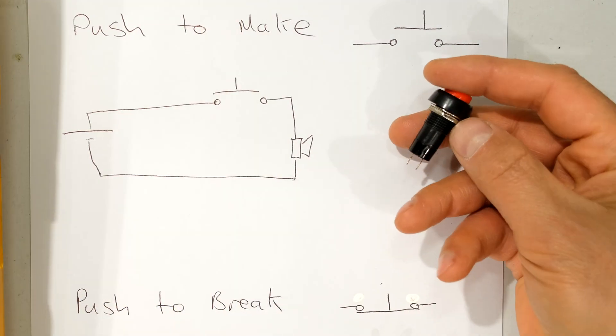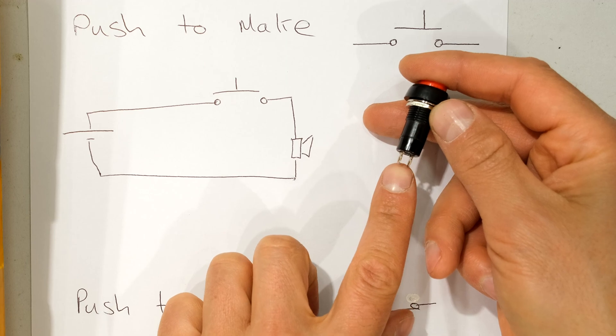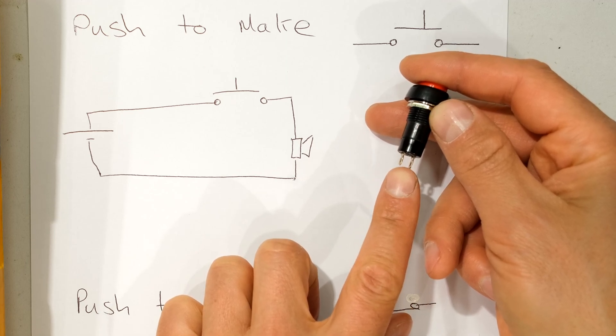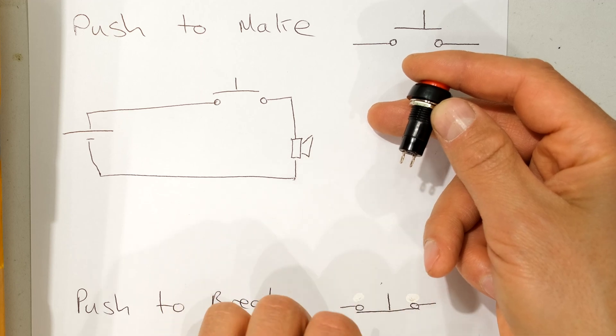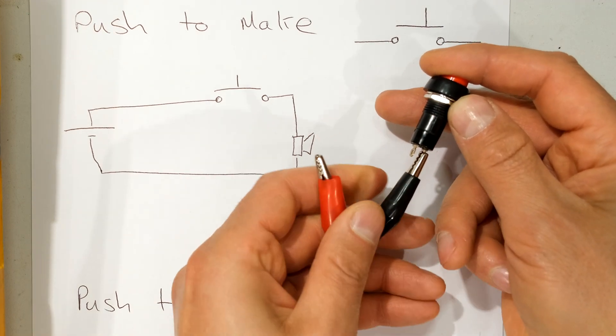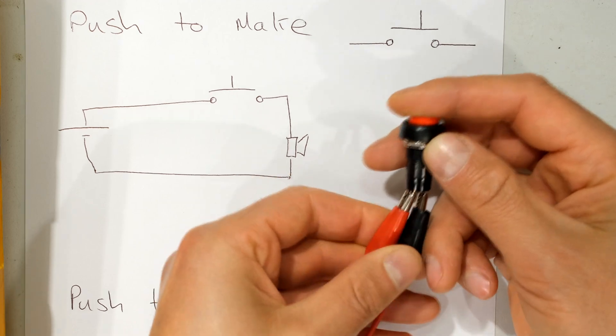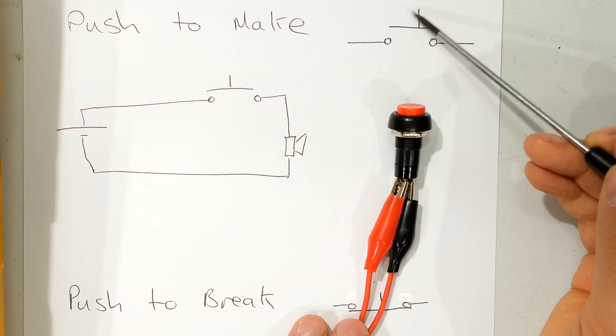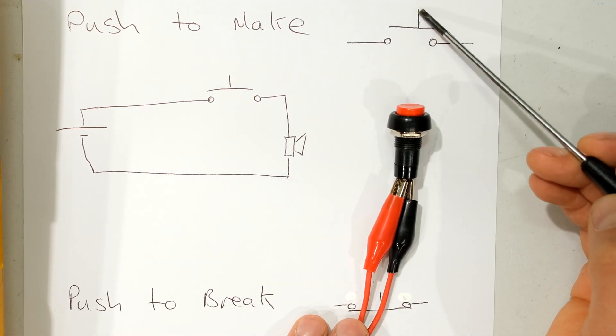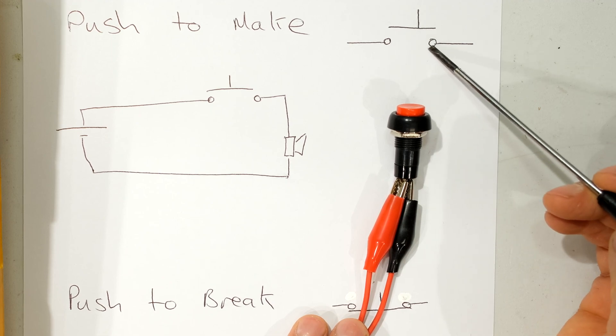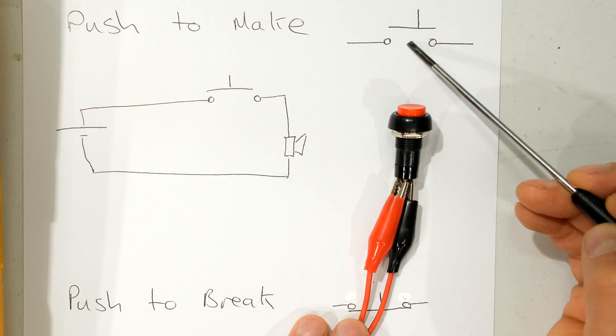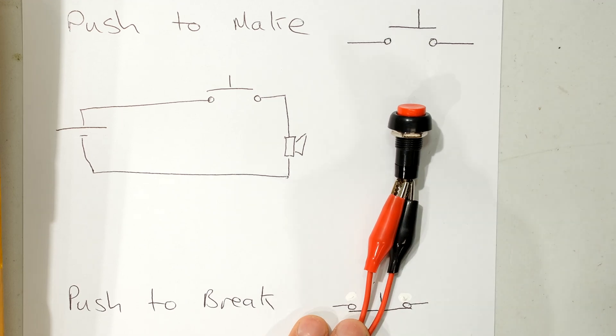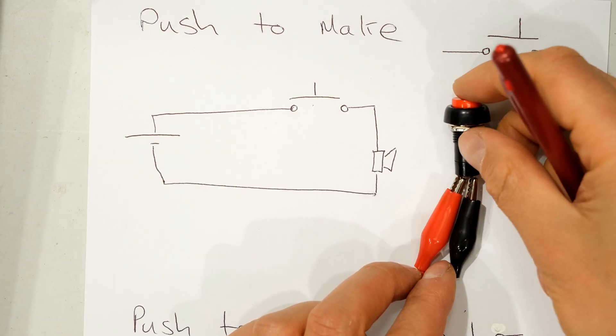Right, so here is my push to make switch. What you'll notice is there are only two connections on this particular one. So this is a single pole single throw switch. I'm going to connect the meter to one leg and the other side to the other leg. Right, so over here we have the symbol. You can see there's the push button and there is the contacts or the poles and as I depress this platform that shorts out these two contacts therefore closing the circuit.